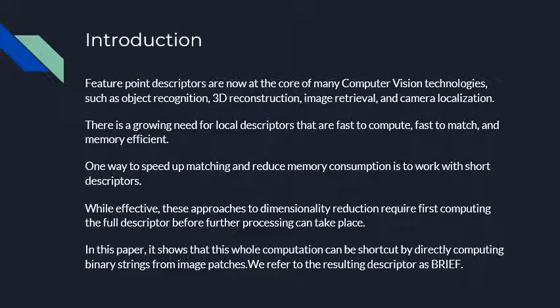Let's begin with a small introduction on BRIEF. Nowadays feature descriptors have become the core of various computer vision techniques like object recognition and 3D reconstruction. Therefore we need these descriptors to be fast and memory efficient. The team thought: what if our descriptors would be shorter in length? Shortness in length could be obtained by applying dimensionality reduction techniques such as PCA or LDA, and even more drastically, dimensionality reduction can be obtained by using hash functions that reduce the saved descriptors to binary strings.